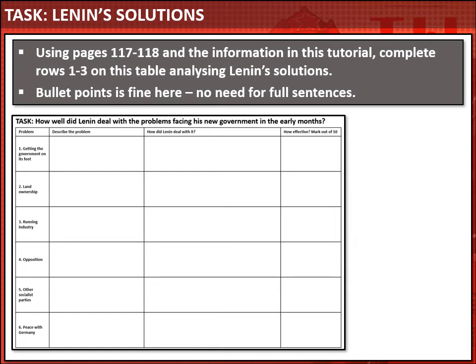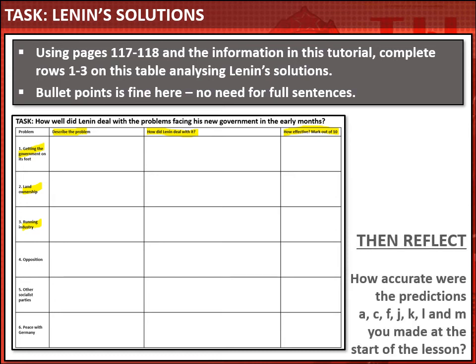Now it's time for your main task. I'd like you to read pages 117 to 118 in your textbook and, using that information and the information in this tutorial video, complete the first three rows on your worksheet, looking at the problems Lenin faced and how he solved them. For each one, describe the problem the Bolsheviks faced and put some bullet point notes on how Lenin dealt with it. I also want you to score Lenin in each area — how effectively did he solve that problem? When you're done, return to the predictions you made at the start and check predictions A, C, F, J, K, L and M. How accurate were your predictions?